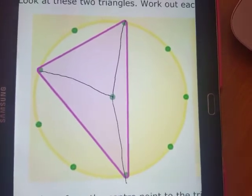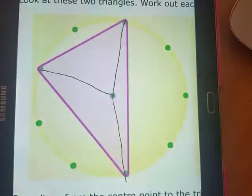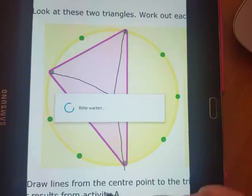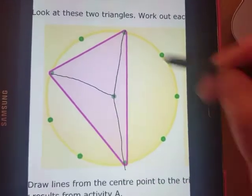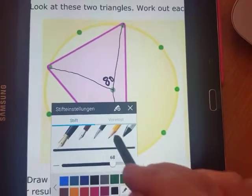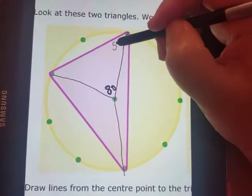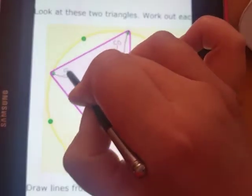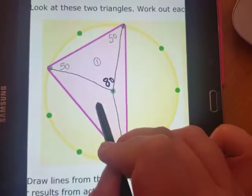Now look, for this triangle, let me turn on the pen. So we said that was 80, and then this bit was 50, and that bit was 50. So just in that first triangle, that's the first triangle, here's the second triangle.